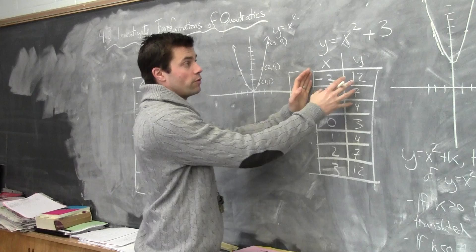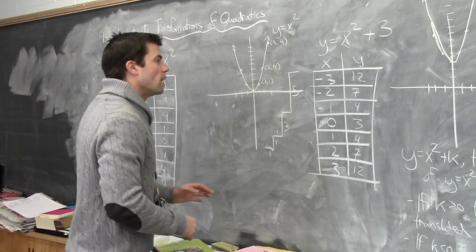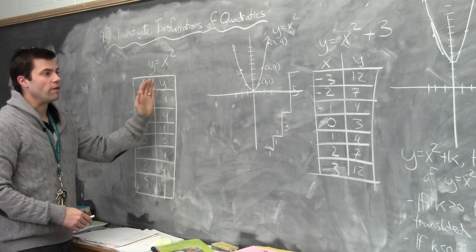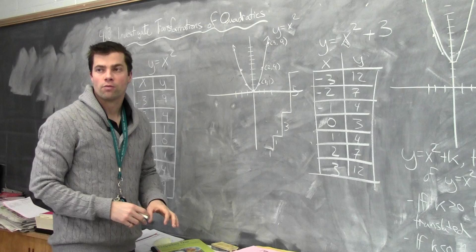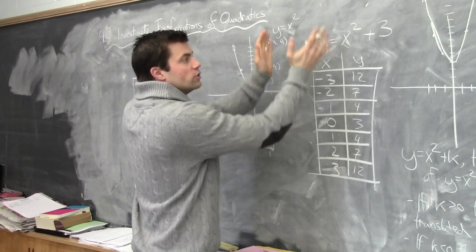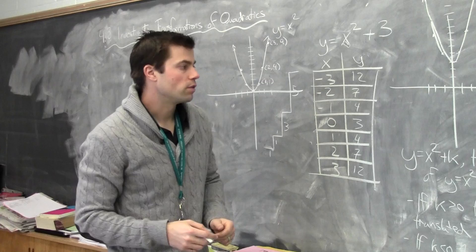We can do a table of values, or we can realize that from our standard graph we've just added 3 to the y values. In effect, we've raised the whole graph up 3 units — all x values stay the same, y values have shifted up 3 units, or as we call it, translated up 3 units.